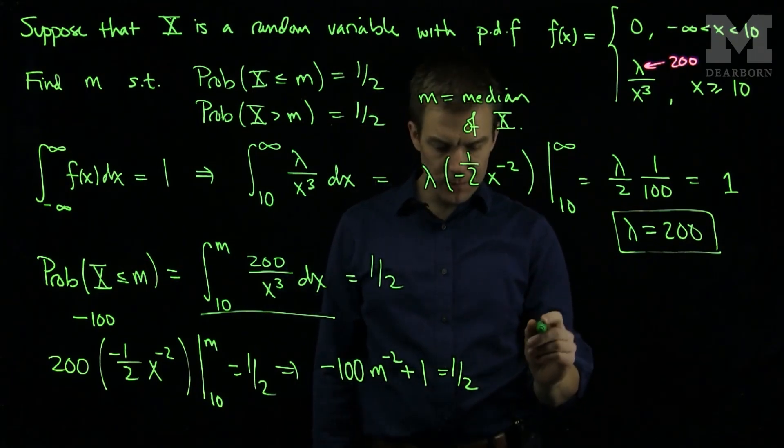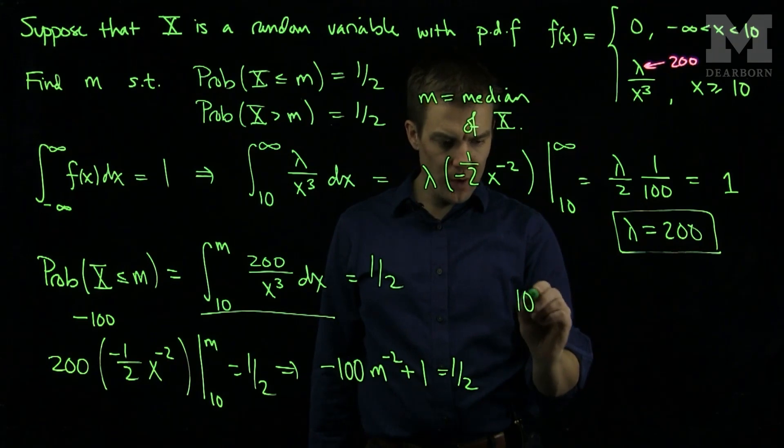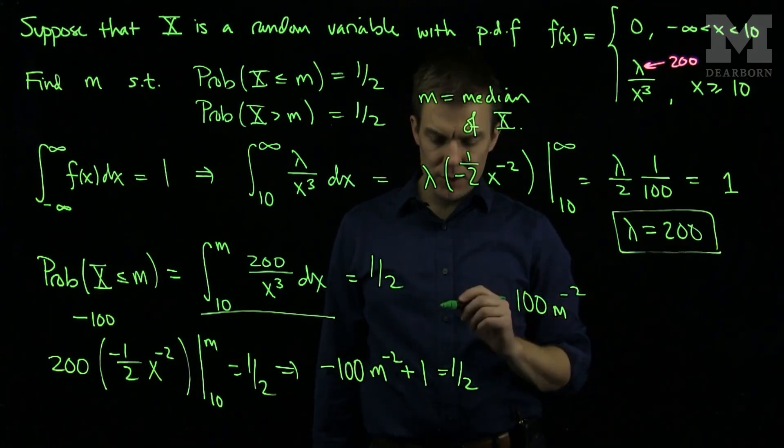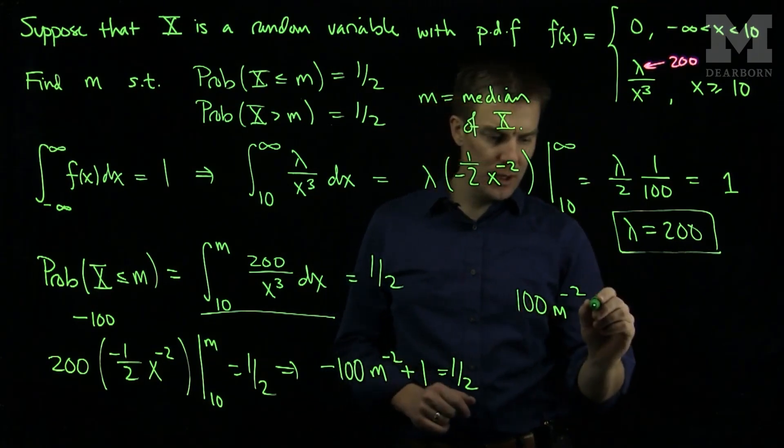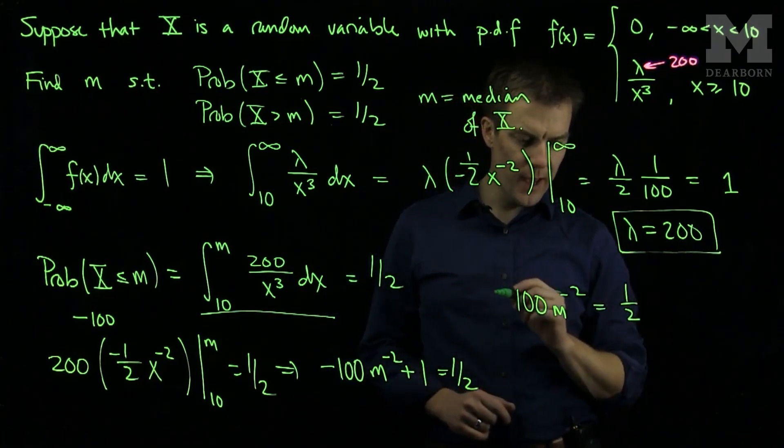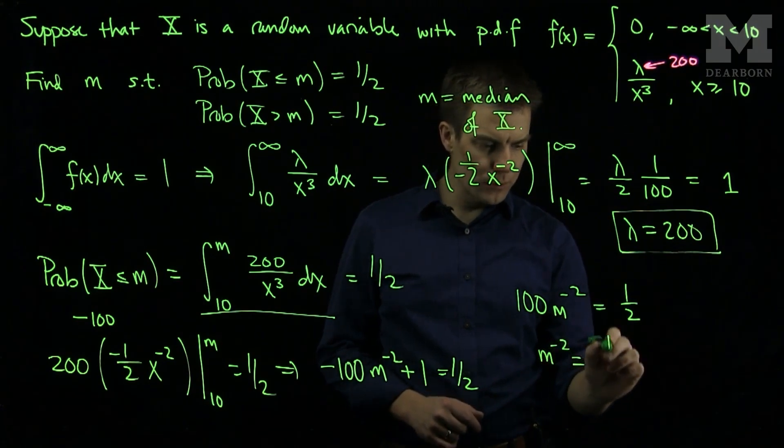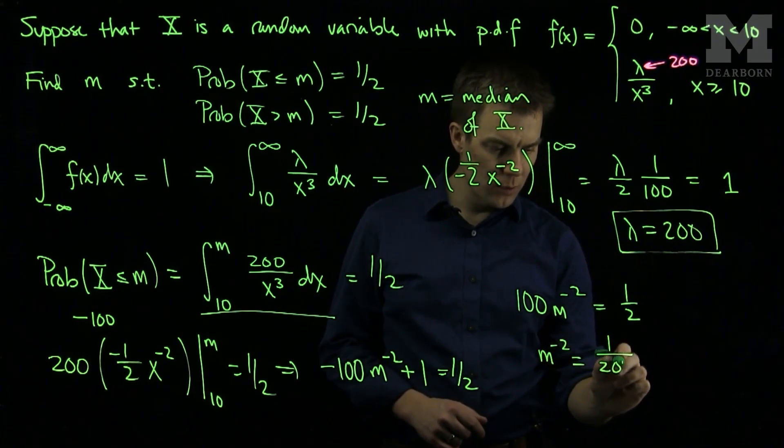So solving this equation we have 100 m to the negative 2, by putting this on the other side of the equation, is equal to 1 half. Which tells me that m to the negative 2 is equal to 1 over 200, or equivalently that m squared is equal to 200.